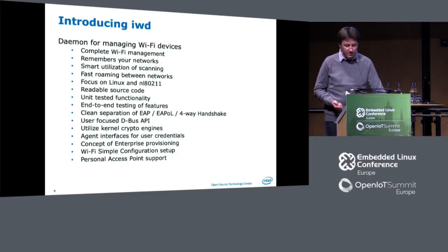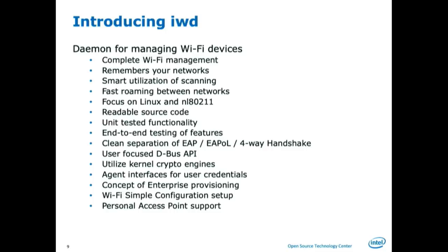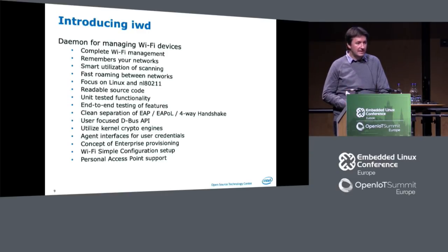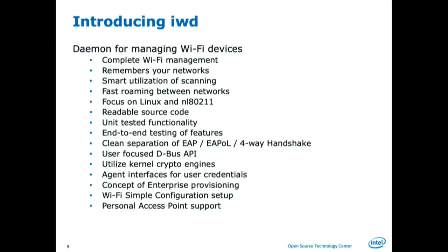The D-Bus API we expose is really user-centric — focused on what the UI or user needs to do, not what we want to do technically. We have everything put into an agent: you only get asked when you actually need the information. You don't have to provide things upfront. The difference between WPA1 and WPA2 — most users don't care. Pick the strongest encryption and use it; don't ask the user which encryption they want. Same for enterprise networks: if you're missing something like the private key, ask for it when you actually need it. Ask at the right point, but give the user the ability to enter the information then.